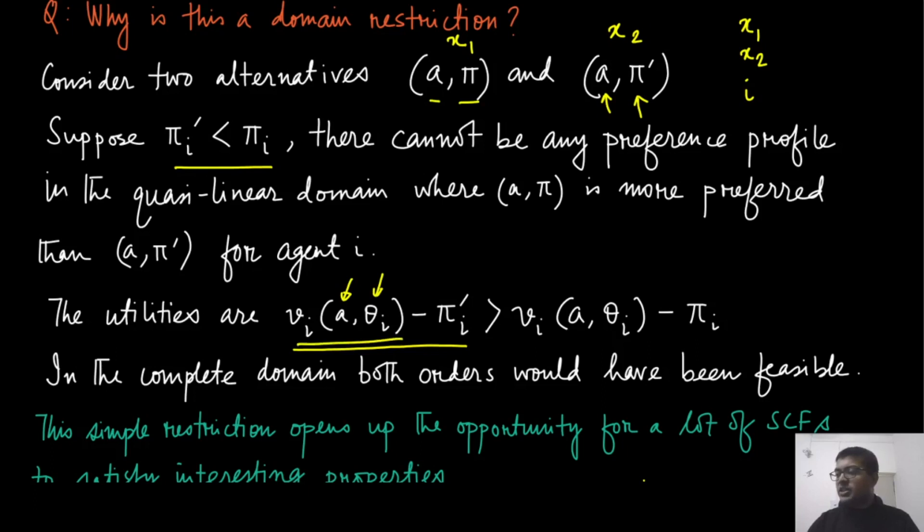What is changing is the payment, and because the payment is smaller in pi_i prime, this is always going to be more preferred by this individual. So that is a domain restriction because now in this quasi-linear domain, there cannot be any situation where x_1 is going to be more preferred than x_2. Because in x_1, the payment is pi, which is more.